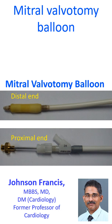The proximal end of the mitral valvotomy balloon displays the balloon size — 24 in this case. The size of the balloon required for an individual is calculated from the height of the person. Height in centimetres is divided by 10, and 10 is added to the quotient to get the size of the balloon needed in mm.